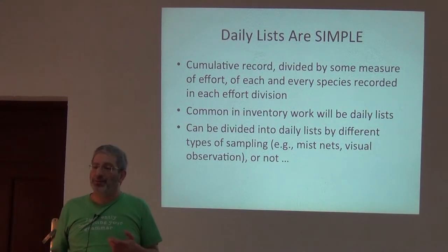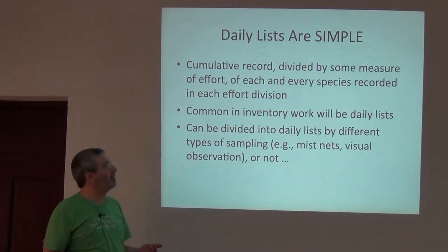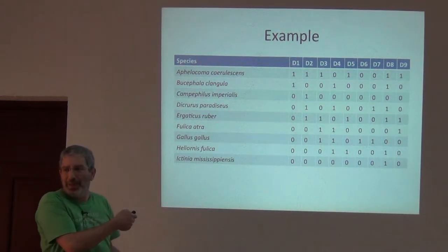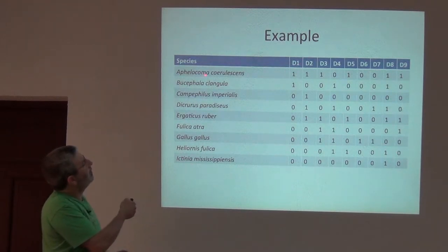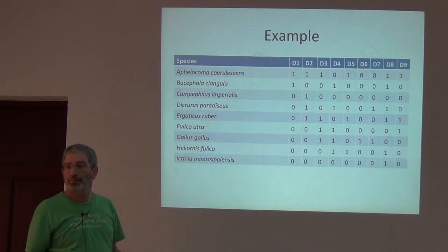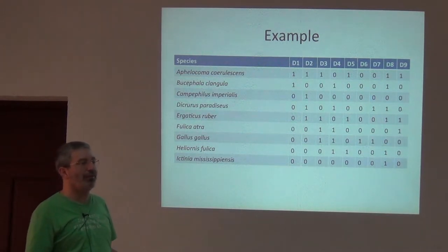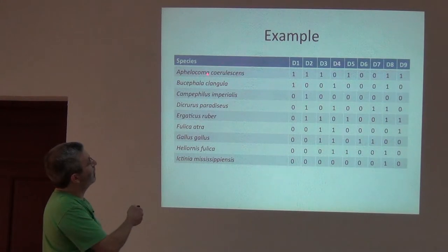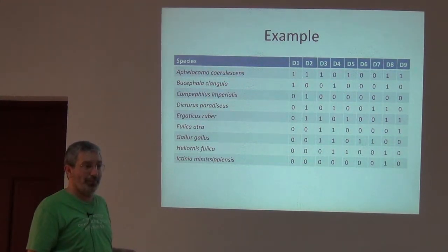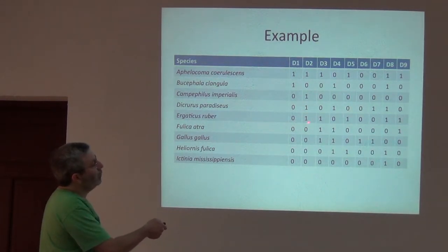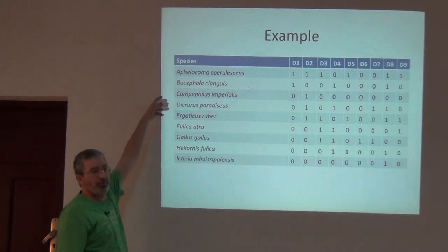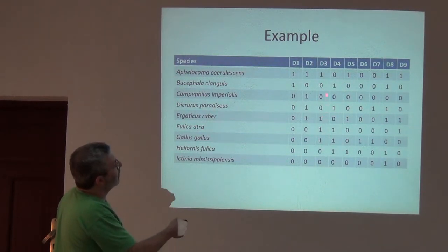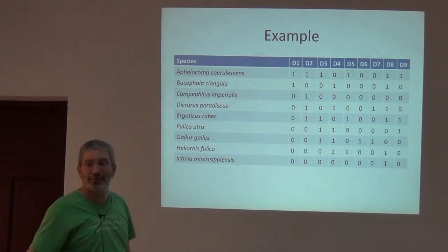When we talk about daily lists, it's basically this: each day, just on a page in your field notebook, on day one you saw this species and this species — so your daily list at the end of day one has two lines in it. The second day you go out and you see the first species, Afolacum acerolescens, again, but you also see three new species, and so you add those three species to your list. The third day you go out and see two new species, and also repeat-detect two species.